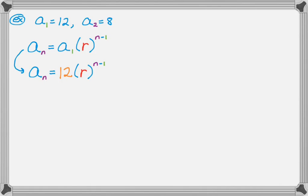So that means a sub n is actually 12 times r to the n minus 1. And now what I want to do is I want to figure out the value of r. So I know one other thing. The other thing I know is that a sub 2 is equal to 8. So just based on the formula, I can replace all the n's with 2. I'm going to show that step.